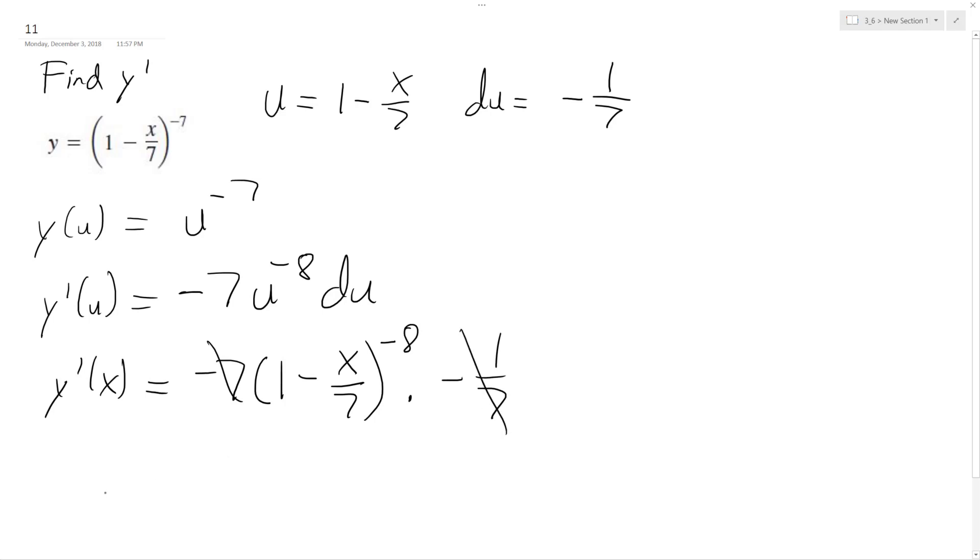And the interesting thing is this negative 7, this negative 1 7th cancel out, and we're simply left with quantity 1 minus x over 7, raised to the negative 8th.